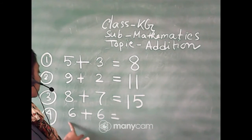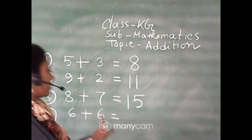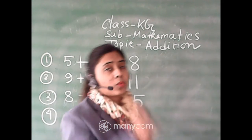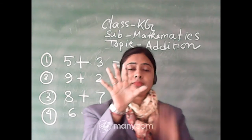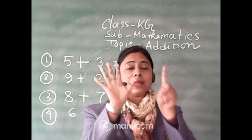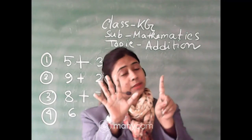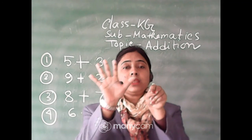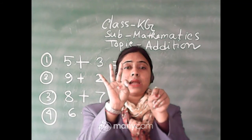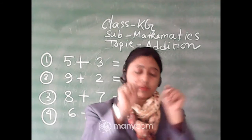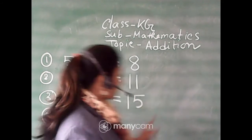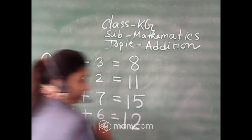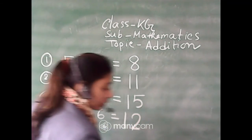Next: six plus six. Here both numbers are the same. So six fingers: one, two, three, four, five, six, and then the other number is also six, so counting on: seven, eight, nine, ten, eleven, twelve. So six plus six is equal to twelve.